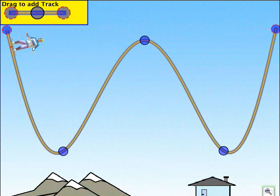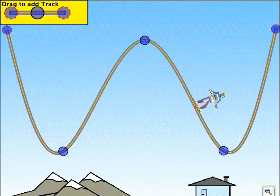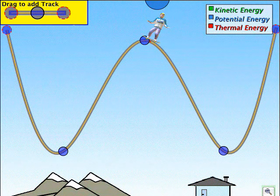After the student has created a skating track, a number of graphs can be displayed to show the energy changing from kinetic to potential and back.